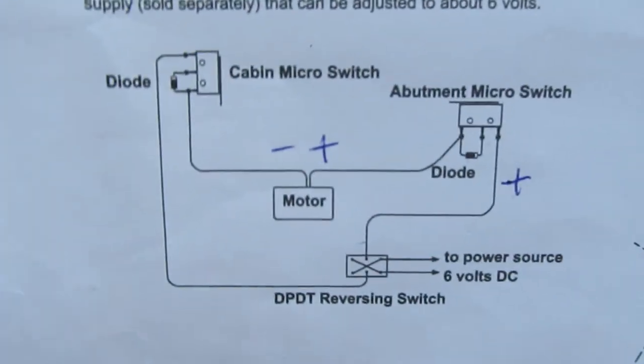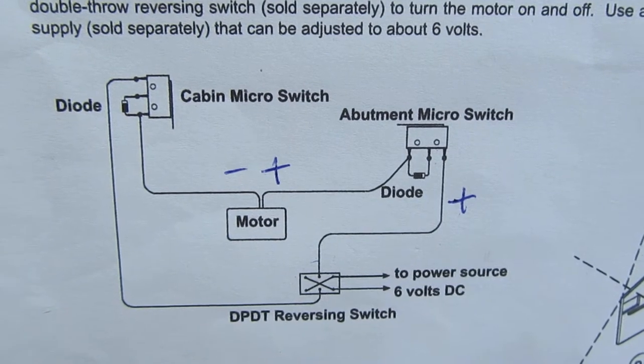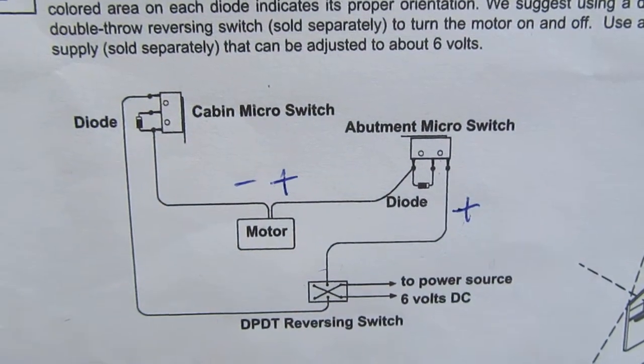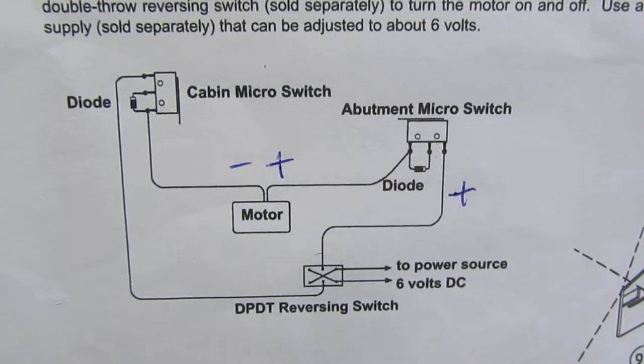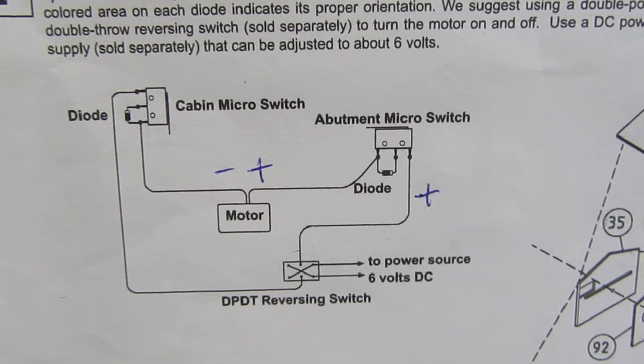The original schematic shows the cabin micro switch which is the upper limit, and the abutment micro switch which is the lower limit. These switches I don't have of course, and the motor coming in. You have to have a polarity reversing switch as shown at the bottom.